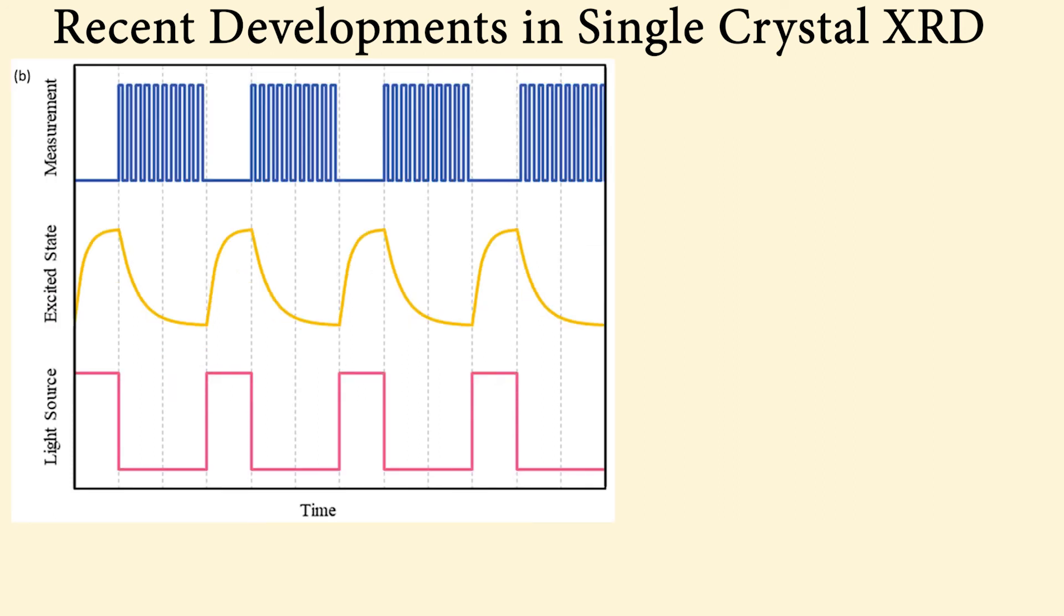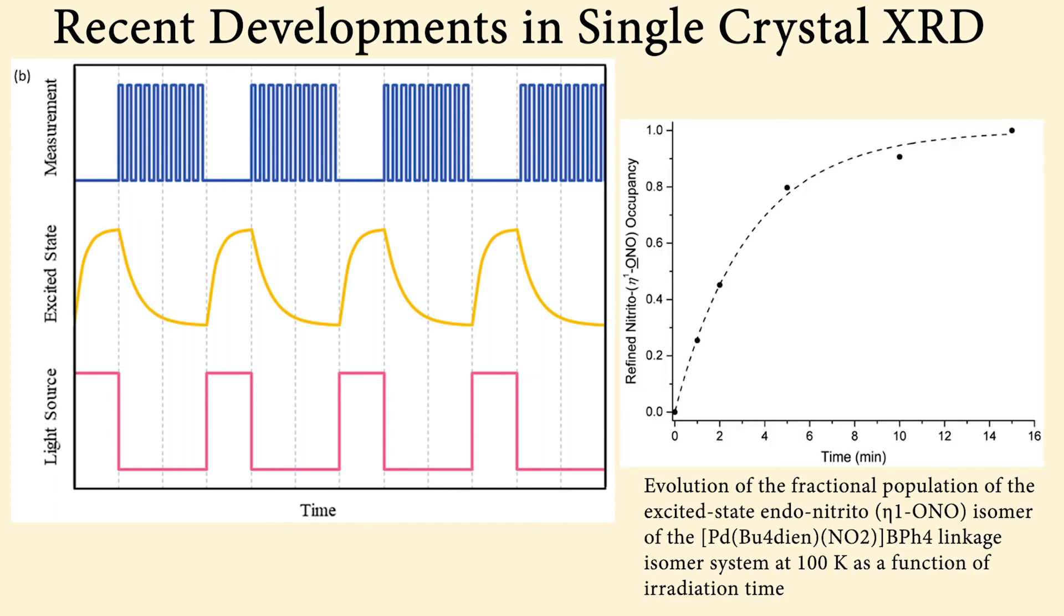Repeating this cycle with varying time delays allows a wide range of light-activated solid-state reactions to be observed and characterized that would not be accessible without this technology, as in the example of the isomer shown on the right-hand side of this slide.